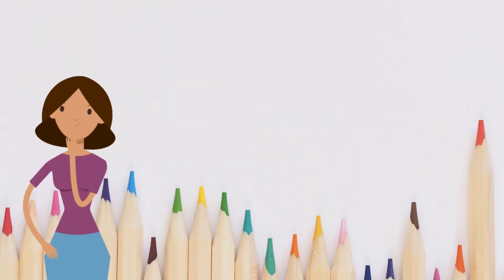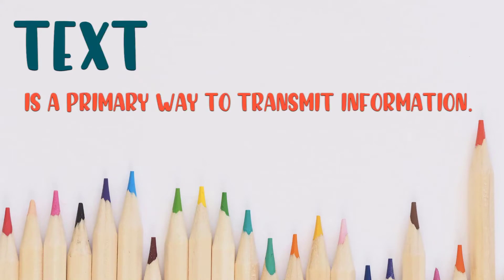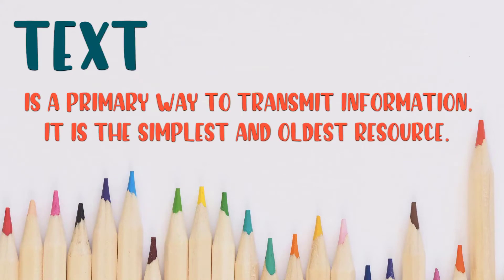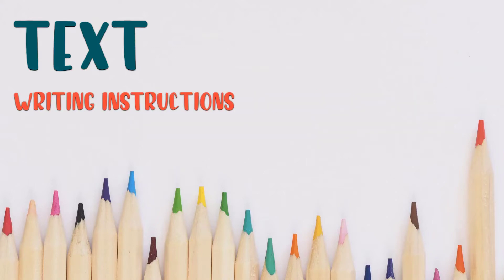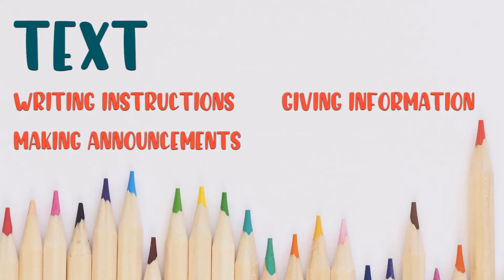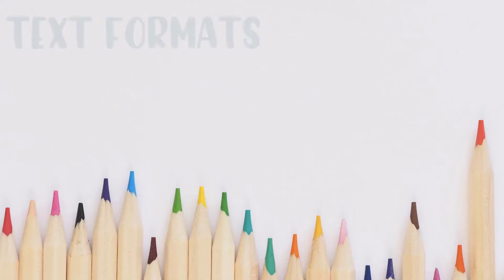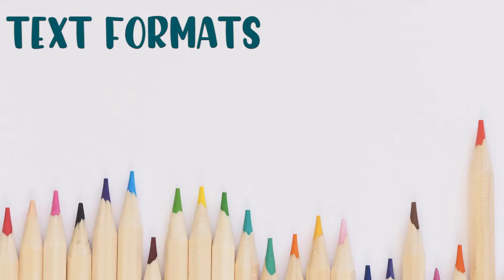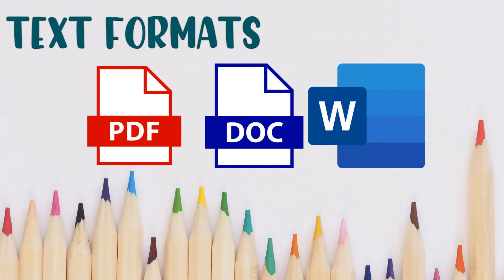First, we have text materials. Text is a primary way to transmit information. It is the simplest and oldest resource. This resource can be used in writing instructions, making announcements, giving information, and narrating events. Most text materials can be written in PDF format or MS Word Office.